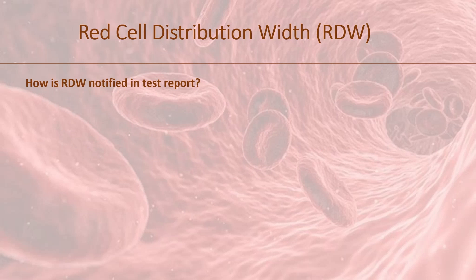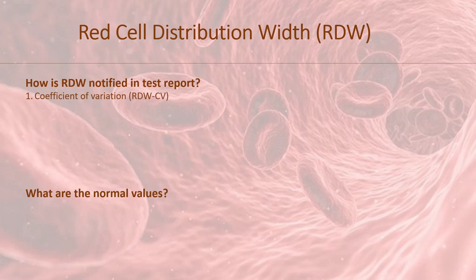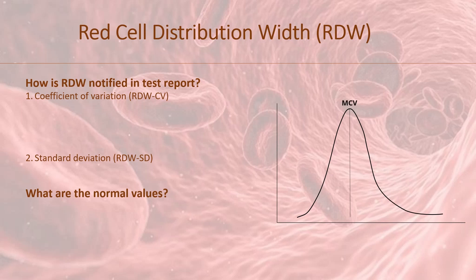How is red cell distribution width notified in a test report and what are the normal values? Depending on the types of hematology analyzer, RDW can be reported statistically as coefficient of variation, or RDW-CV, and/or standard deviation, or RDW-SD. RDW-SD is an actual measurement of the width of the red cell size distribution histogram. It is measured by calculating the width of the histogram in femto-liters at the 20% height level of the red cell size distribution histogram.